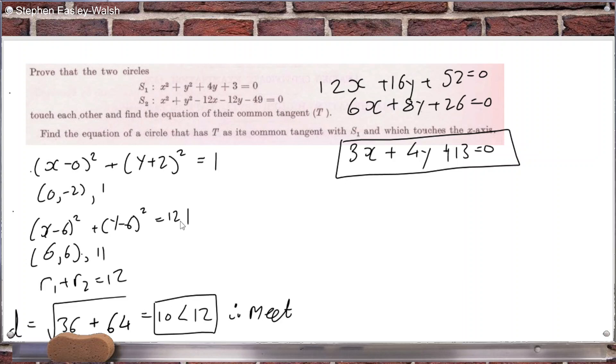Find the equation of a circle that has T as its common tangent with S1 and which touches the x-axis. So we want to find another circle which has T as its common tangent as well. And it's with S1. So S1 is x squared plus y squared plus 0x plus 4y plus 3. And then we have a circle x squared plus y squared plus, we can just say, ax plus by plus c or whatever constants you want to use.